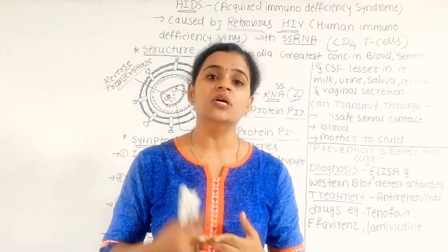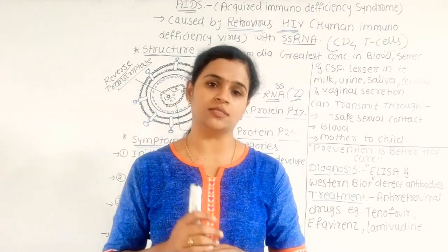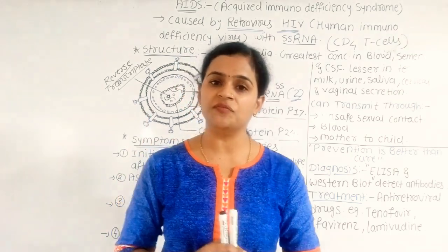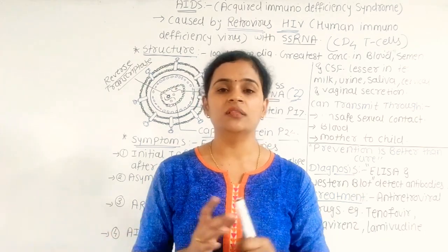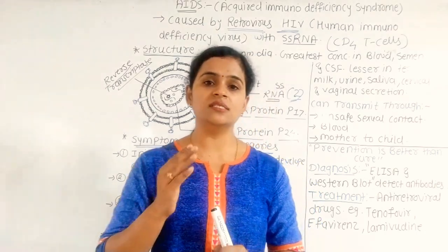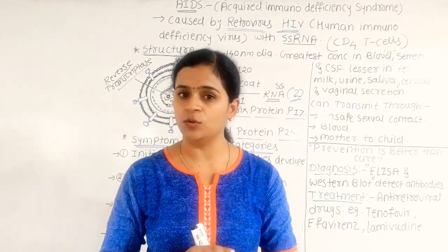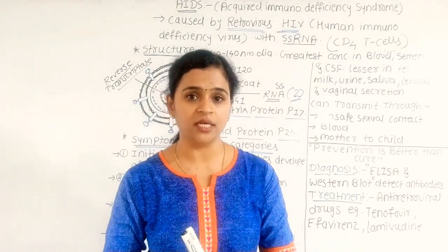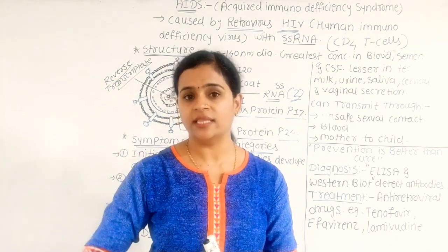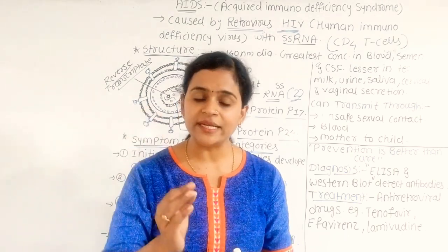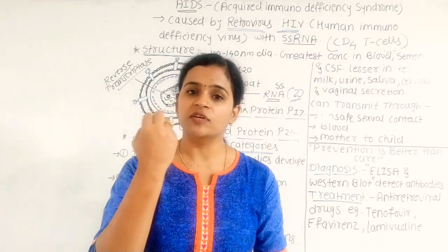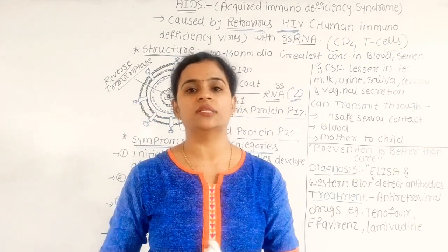Because immunity drops completely, the person can be susceptible to different types of opportunistic infections. Opportunistic infections are infections that do not occur in normal healthy individuals. For example, a simple cold in a normal person stays limited, but in a person with AIDS whose immunity is completely weak, even a simple cold or cough can result in pneumonia and tuberculosis. The person's death occurs due to these different opportunistic infections.